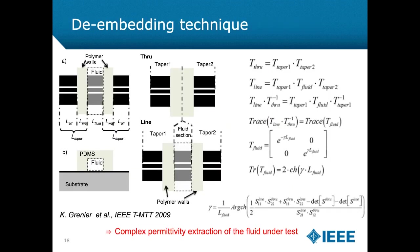For the coplanar waveguide structure, we developed a de-embedding technique to extract the permittivity of the fluid under test. Briefly, we suppress the impact of the accesses on both sides and the electromagnetic impact of the walls maintaining the fluid in place, allowing us to go directly to the permittivity of the fluid.